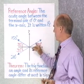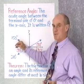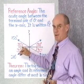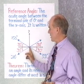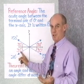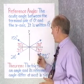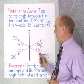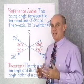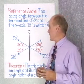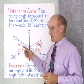Here's 30 degrees — the reference angle is 30 degrees. The terminal side of 150 degrees has a reference angle of 30 degrees. Here is 210 degrees in standard position, and the reference angle for that is 30 degrees. Likewise, here's 330 degrees, and the reference angle is also 30 degrees. So the reference angle for any angle in standard position is the acute angle between the terminal side of theta and the x-axis.